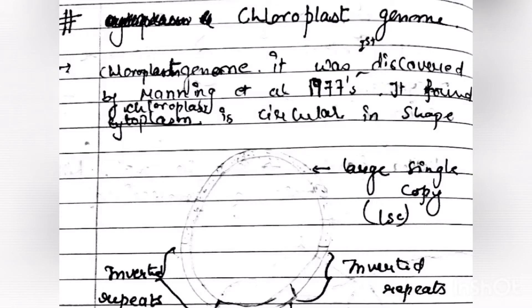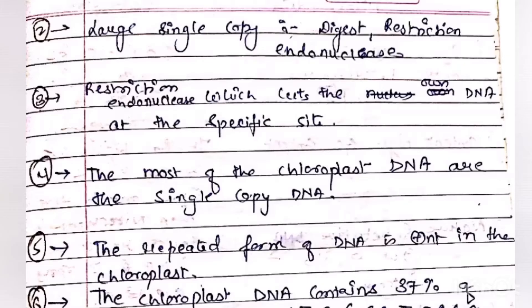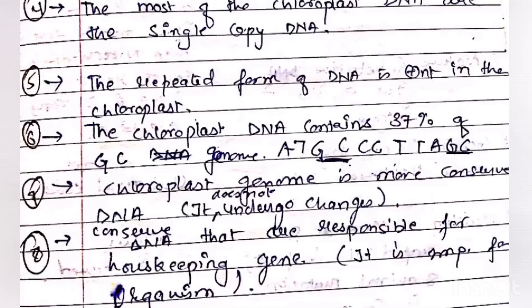Chloroplasts are organelles which function to produce sugar via photosynthesis in plants and algae. Most of the chloroplast DNA exists as a single copy, with repeated forms of DNA also present in the chloroplast. Chloroplast DNA is homozygous, circular, and single-stranded DNA.